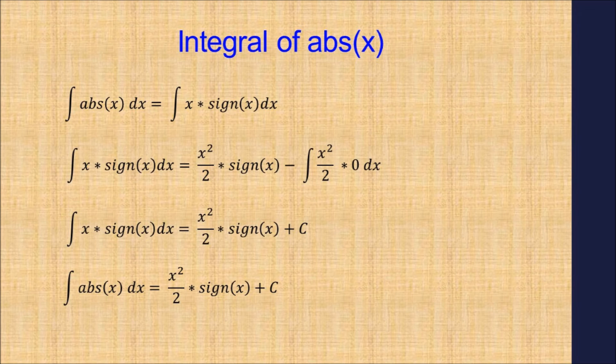Continue to simplify. Note, after using the integration by parts method, the second term is simplified to 0. The end result is: the integral of the absolute value of x dx is equal to x squared over 2 times the signum of x plus your constant.